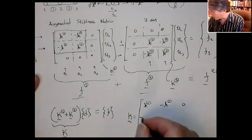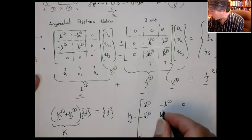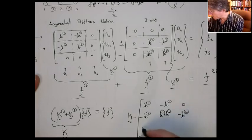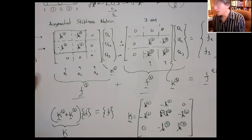k1 minus k1, 0, minus k1, k1 plus k2, minus k2, and then k2. All right.